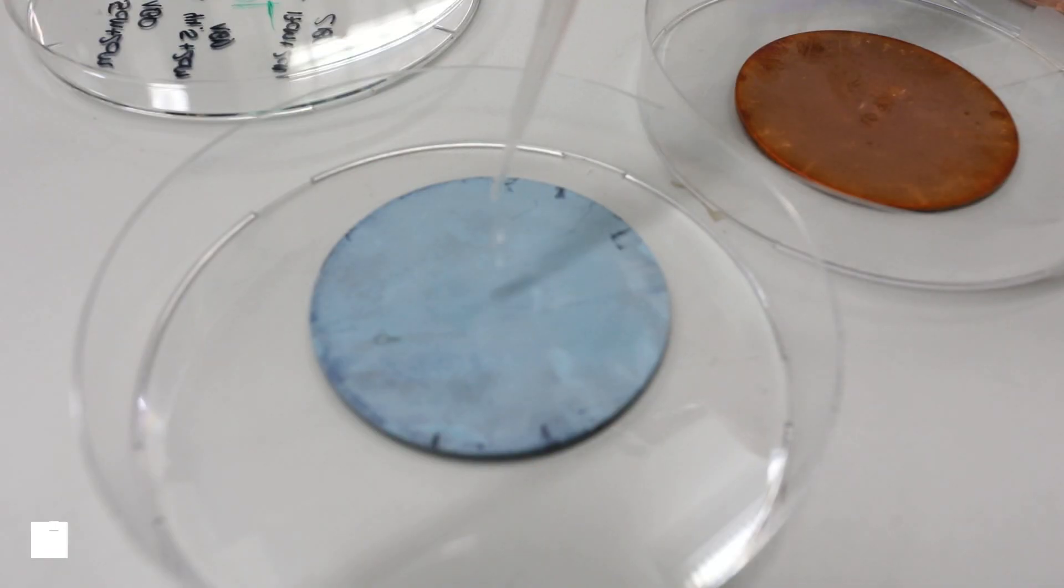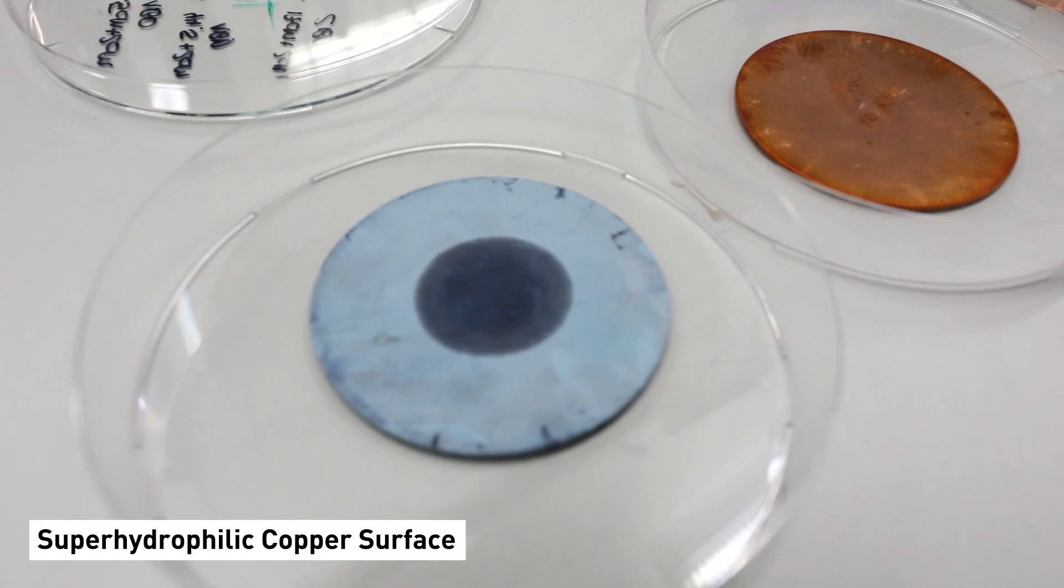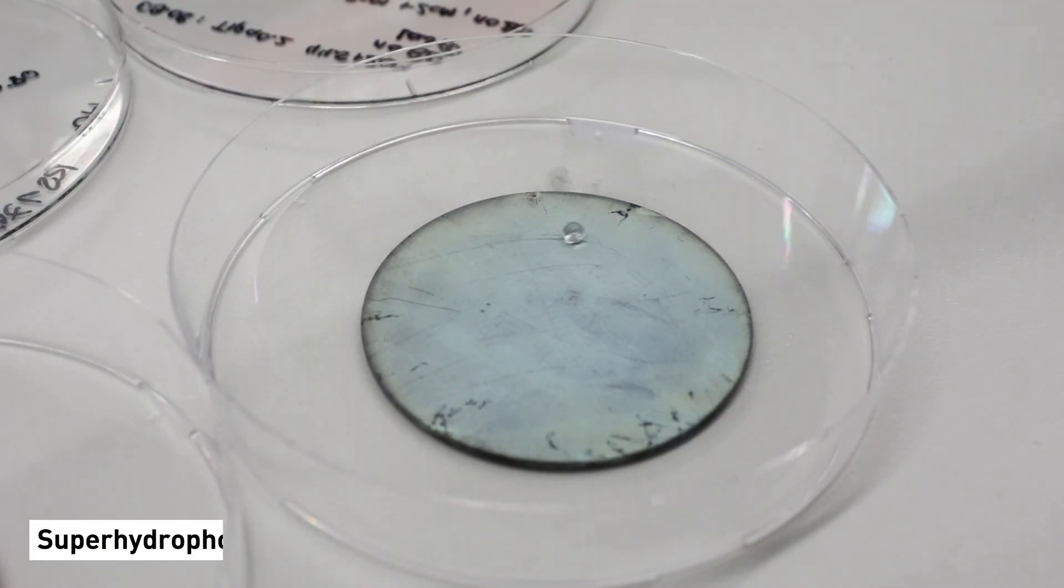You might be familiar with how water drops are soaked into a sponge. This is what we call superhydrophilic behaviour. The water directly builds a film on the surface. Or you might know how water drops behave on the leaves of a lotus flower. They bounce back directly. This is what we call superhydrophobic.